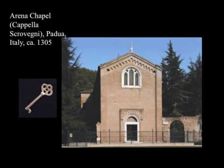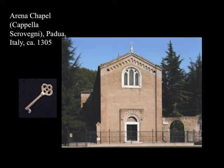A little bit of background about this building: it's really unusual in that most of the time a structure is built and then an artist comes in and paints it. But in this case, it was commissioned by a man named Enrico Scrovegni, who it appears actually had the building designed and created around the intended paintings — which is pretty spectacular. The chapel is officially called the Cappella Scrovegni, but it's close to a Roman ruin of an arena, so it's commonly referred to as the Arena Chapel. It was created in 1303, and Giotto's frescoes were started immediately after, dated from about 1305 to 1306 — taking about two years.